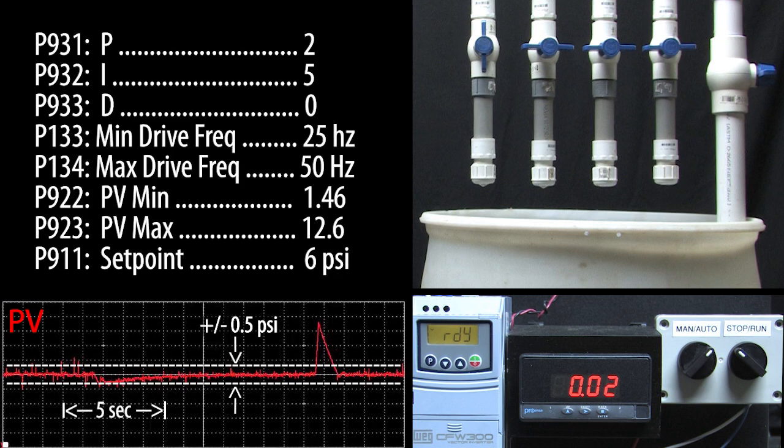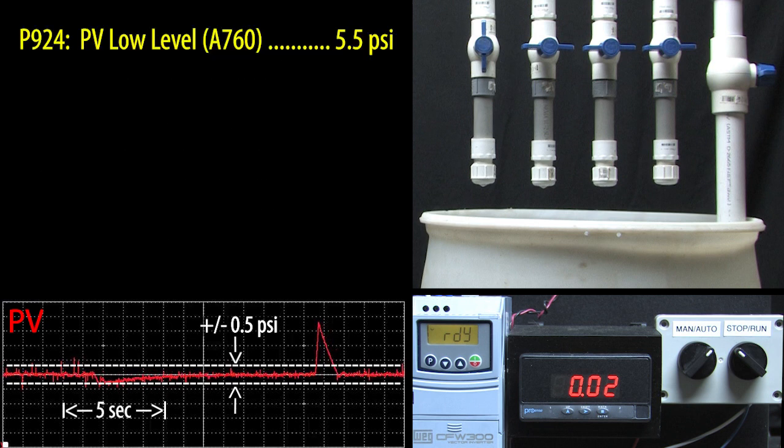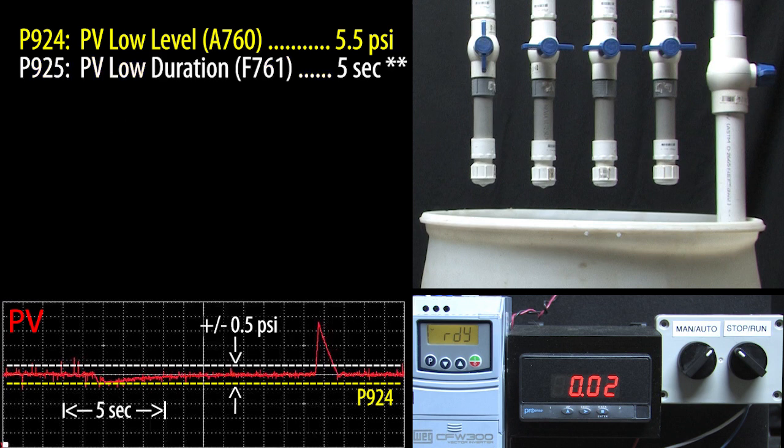These are the key parameters I've set up, which is basically what we did in the quick start video except I increased the P gain to make sure the system ramps up within that 5 second window. Parameter 924 is the low level alarm. That will be 5.5 PSI. Notice that this is in the engineering units that we specified in parameters 5, 10 and 5, 11. Parameter 925 is the duration of the condition that will generate a fault. We want that to be 5 seconds.